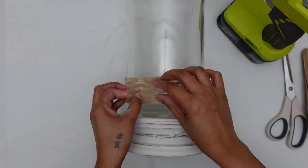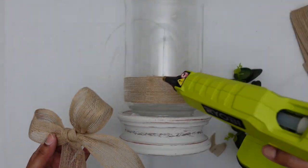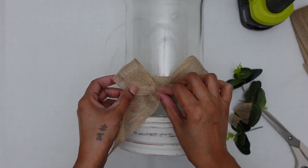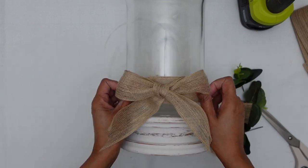Then I went ahead and dressed my hurricane up using my hot glue gun. I stuck a bowl and then played around with it till I got my desired look.